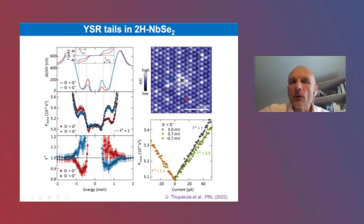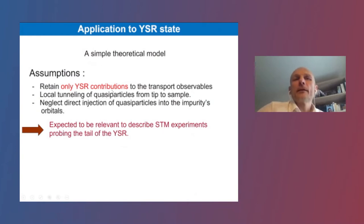I'm a theorist. How can I understand that? We made a few theoretical basic assumptions. First, we will assume that the data are taken away from the core of the magnetic impurity. So we will only retain the bound state contributions to the transport observable, well inside the gap. I will neglect any invasive effect between tip and impurity. And I expect these features to be relevant enough to describe the experiments.